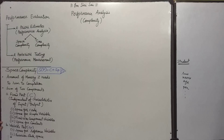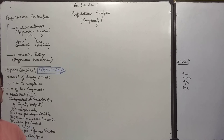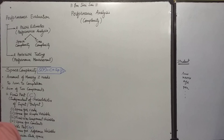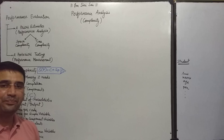Another part of space complexity is the variable part, which depends on instance characteristics. The fixed part was independent of instance characteristics, but the variable part is dependent on the number and size of input and output parameters. This contains space for reference variables and recursion stack space. The space for reference variables depends on the number and size of inputs and outputs.